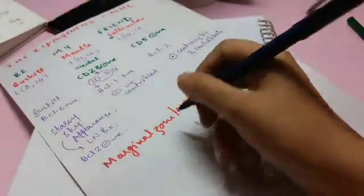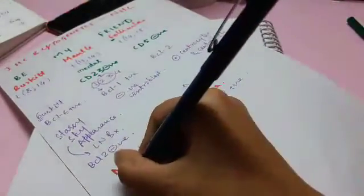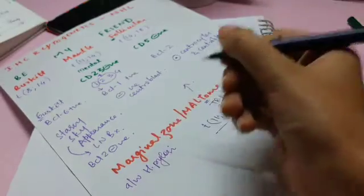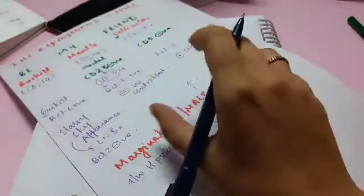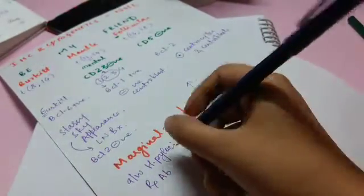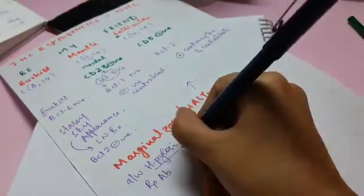These marginal zone lymphomas or MALT-omas are associated with H. pylori infections in stomach and they are benign as a polyclonal activation. So the treatment is also antibiotics to eradicate these H. pylori.